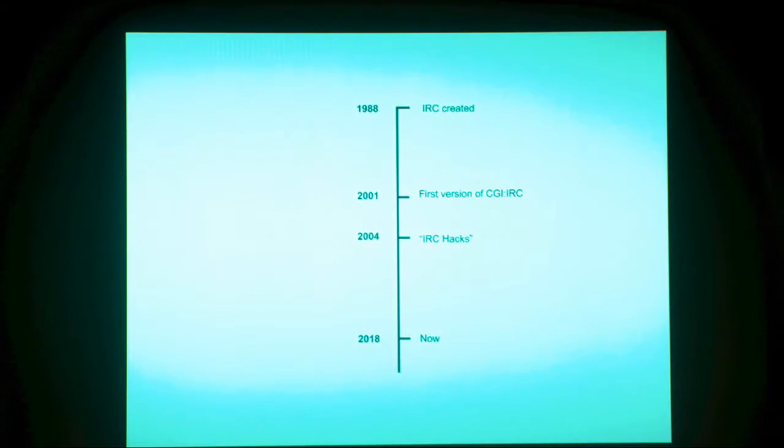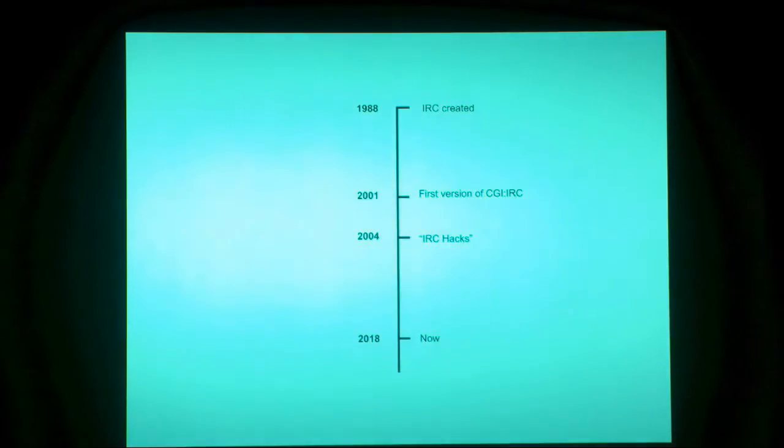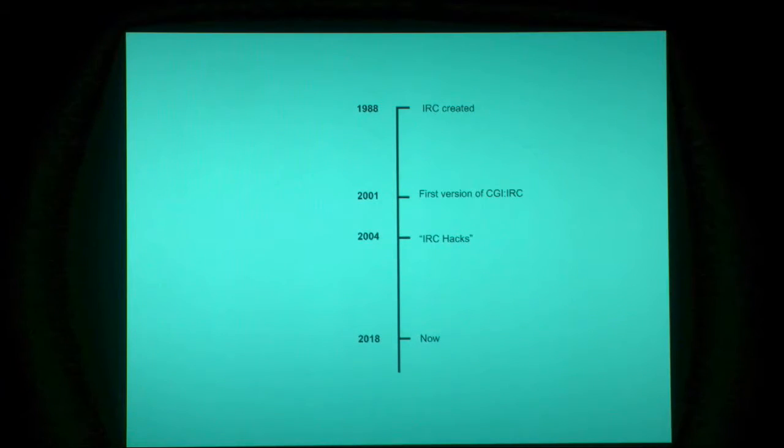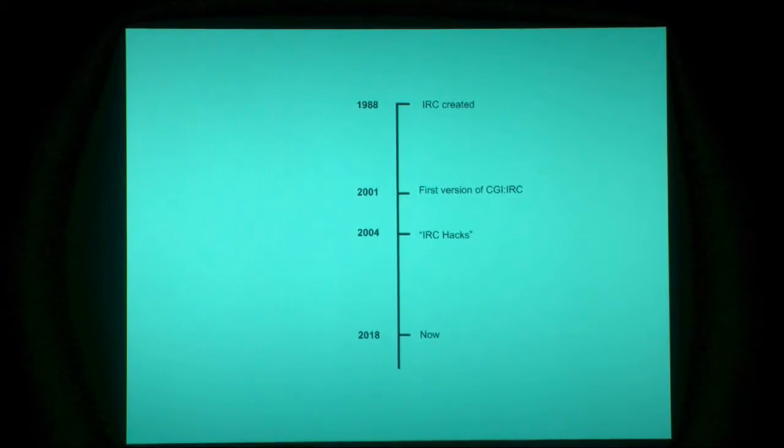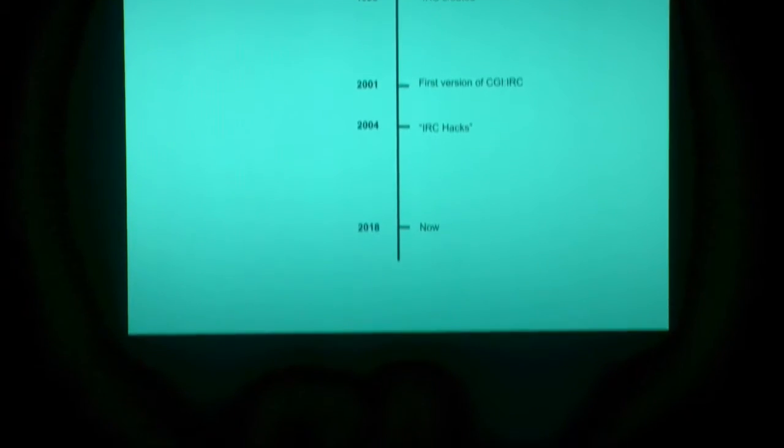Here's a little timeline I made. IRC was created in 1988, and around 2001 was the first version of CGI:IRC. That's 12 or 13 years. We're now in 2018. Scary to think, but CGI:IRC has been around for longer than IRC was when I first wrote it — one of those moments where you realize a lot has happened in the world.